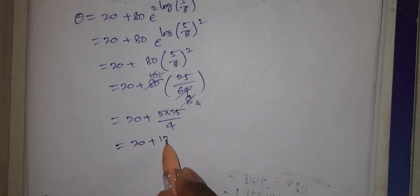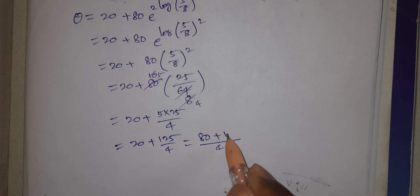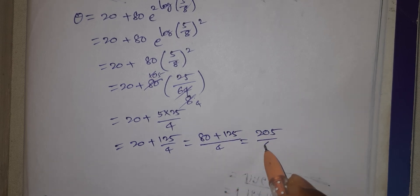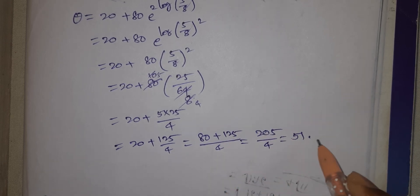That equals 20 plus 5 into 25 by 4, which equals 20 plus 125 by 4. That equals (80 plus 125) by 4, giving approximately 51.25 degrees Celsius.